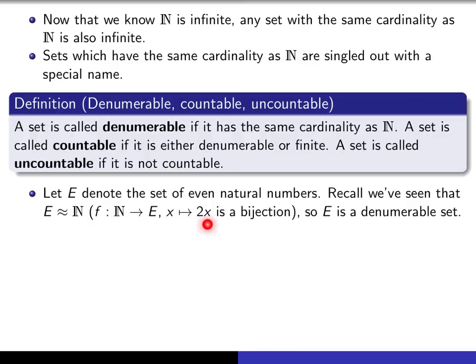So we're going to see that 1 maps to 2, 2 maps to 4, 3 maps to 6, etc. That seems to be generating all of the even natural numbers in a one-to-one way. So that's a bijection, and therefore E is an example of a denumerable set. It has the same cardinality as ℕ.